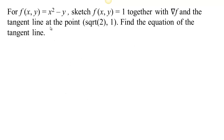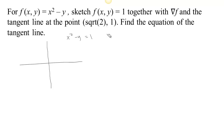Let's look at an example. We have the function f(x, y) = x² - y. We want to sketch the curve where f(x, y) = 1 — that's going to be one level set. If x² - y = 1, then x² = y + 1, so y = x² - 1. Our level curve is just a simple parabola — your basic x² parabola shifted down by 1. On all these points, our function has the same value — that's like one contour line.